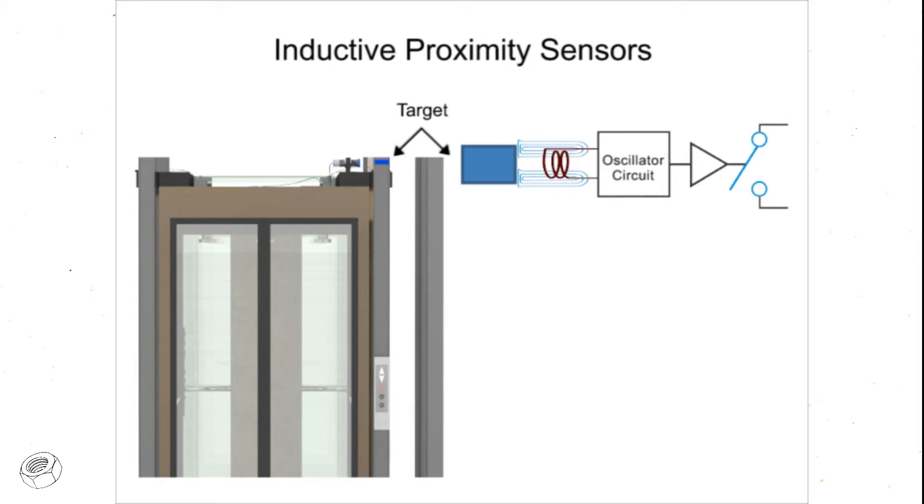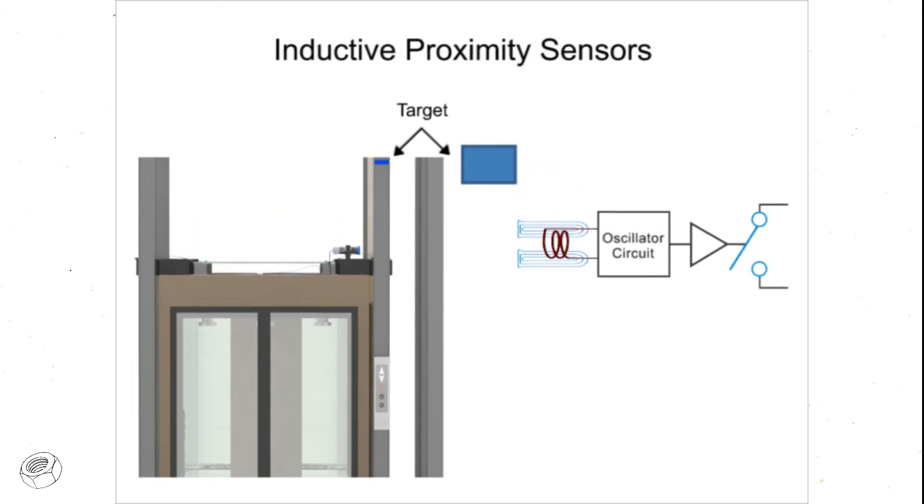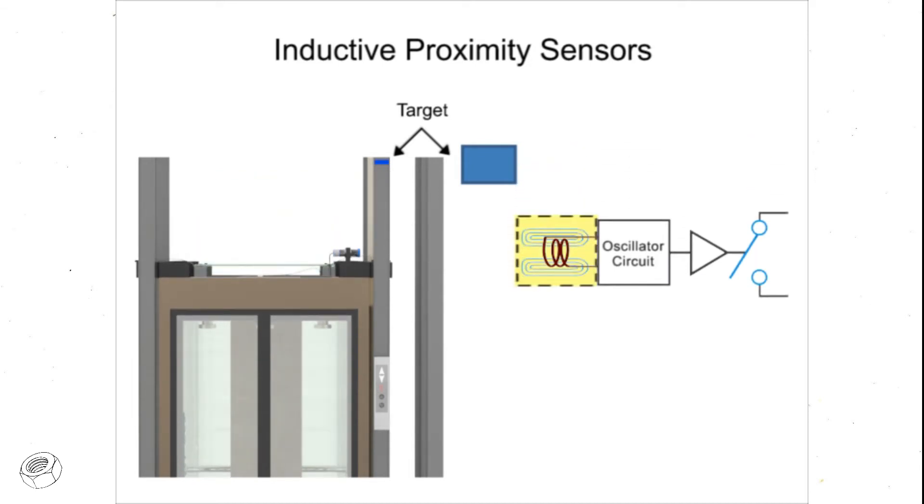When the metal target is removed from the sensor's range, the oscillator will return to its normal amplitude and the switch will return to its normally open or closed output.